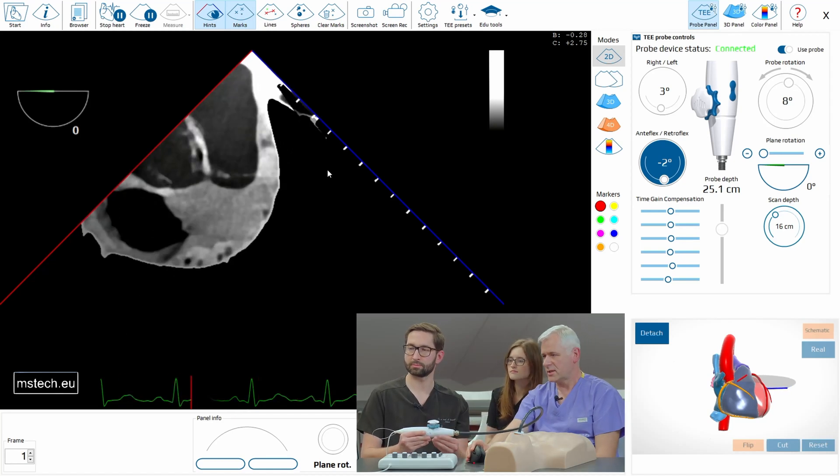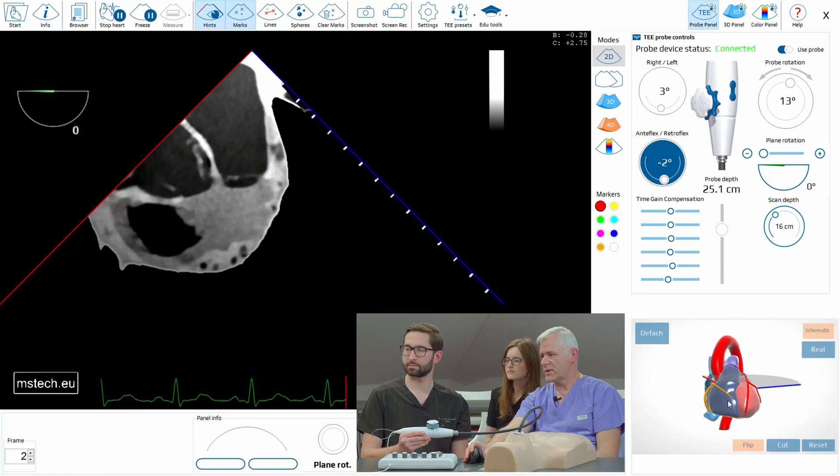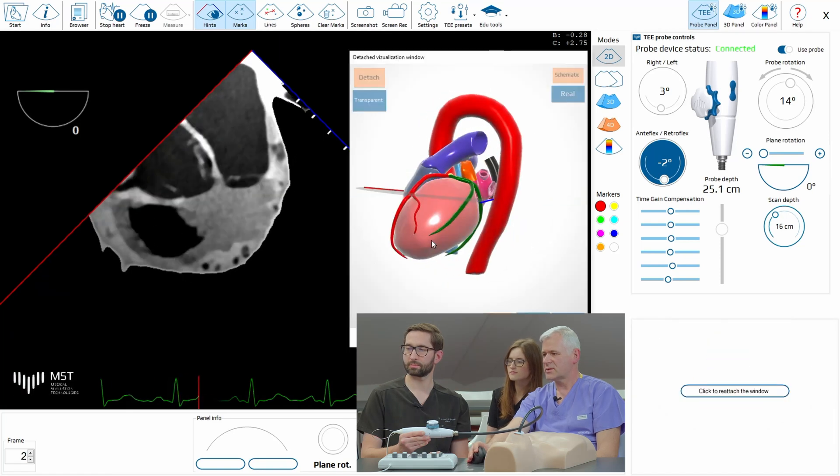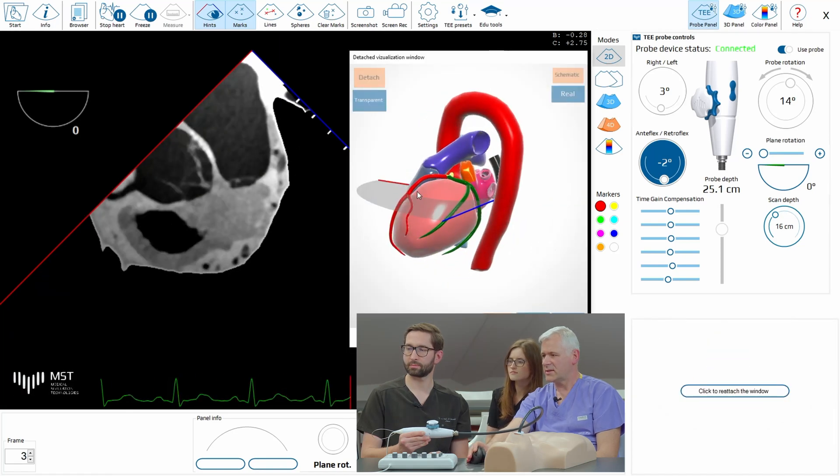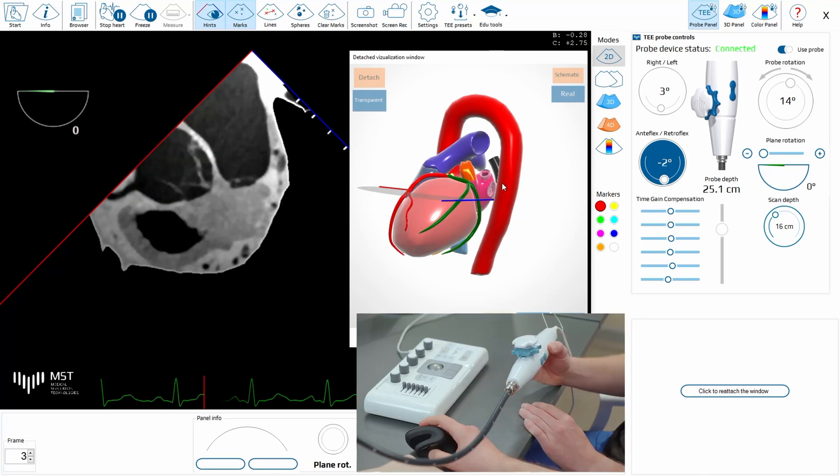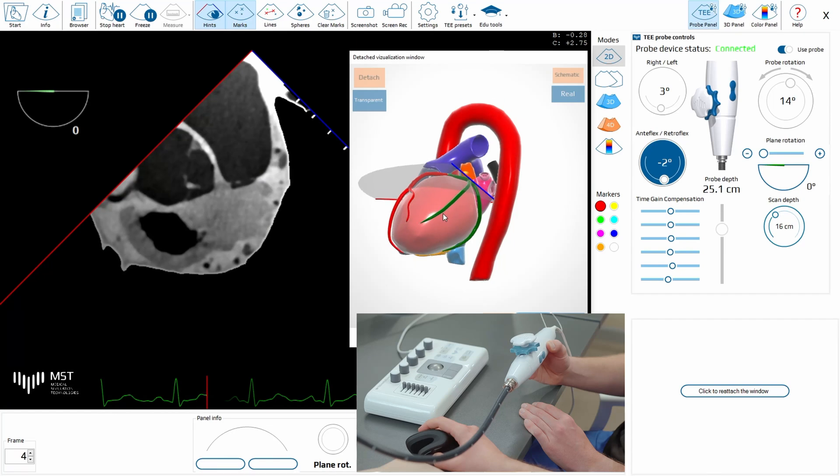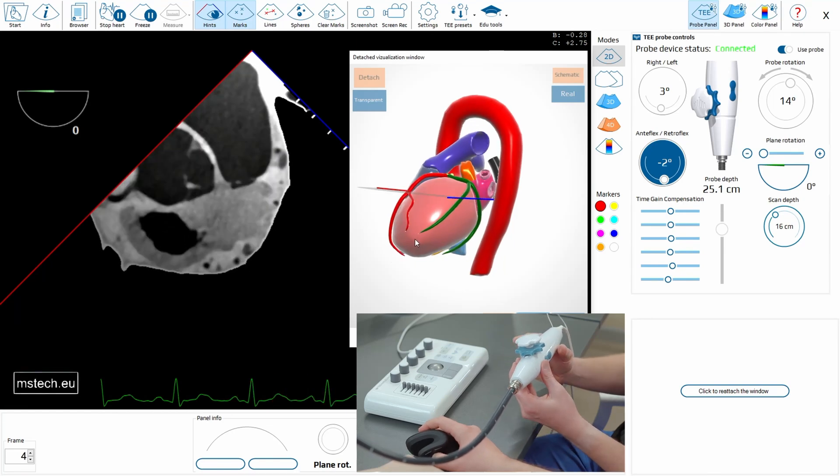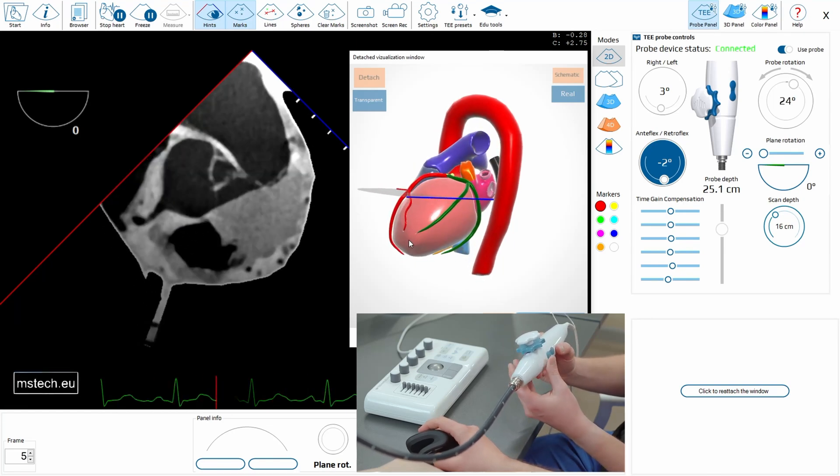Now here it is an important moment because as you can see the plane is now horizontal. But the axis of the left ventricle and left atrium is not horizontal. It's going down. So we have to do retroflexing.